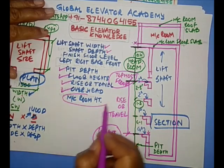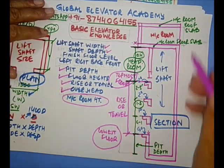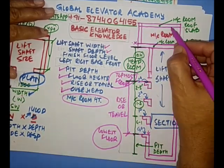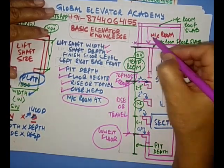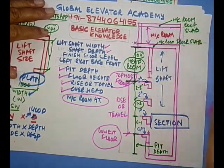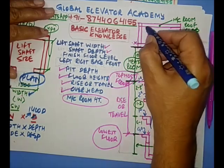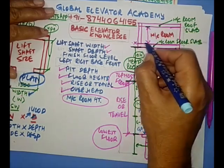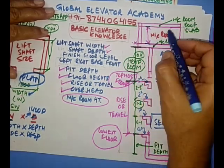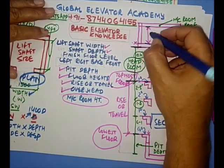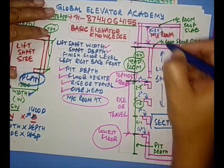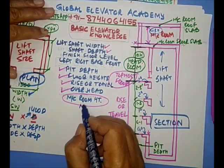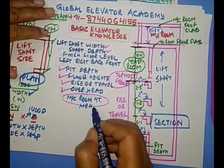So let's focus on machine room height now. This inside height, from here to here, is called machine room height — MRH. This is called MRH.